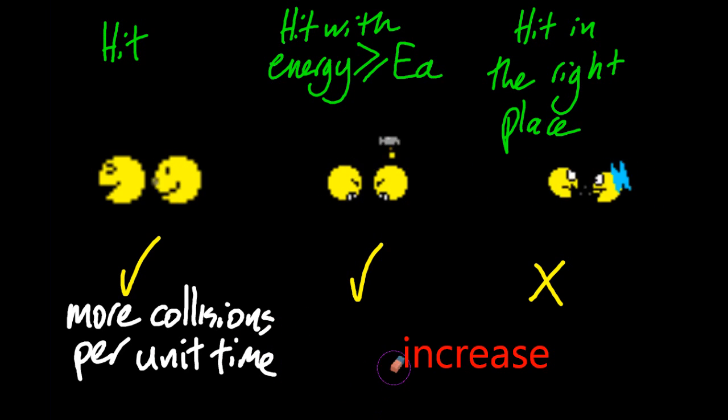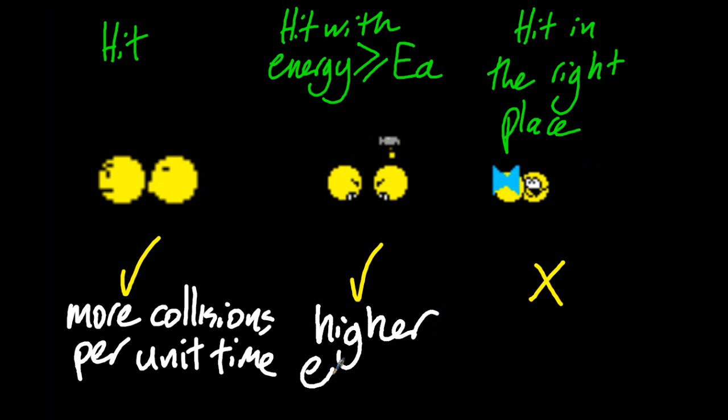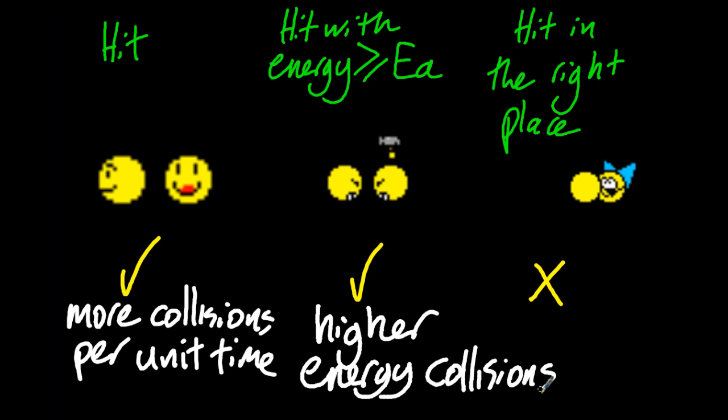And in terms of the energy, there are higher energy collisions. So therefore, the collisions are more likely to have energy greater than or equal to Ea. And we're done.